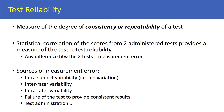The next factor of test quality is test reliability, which is the measure of the degree of consistency or repeatability of a test. Can we repeat the test and expect similar results? If there is a statistical correlation between scores from two administered tests, that provides a measure of test-retest reliability. Any difference between two tests would be a result of measurement error. One source of measurement error is intra-subject variability — that's within-individual variability from day to day, also called bio-variation.